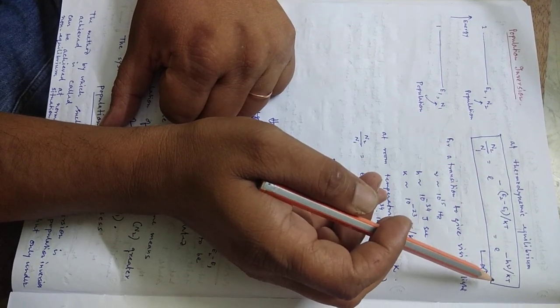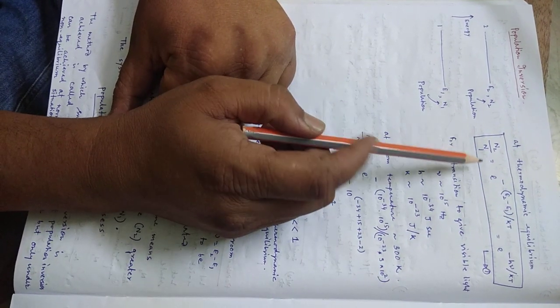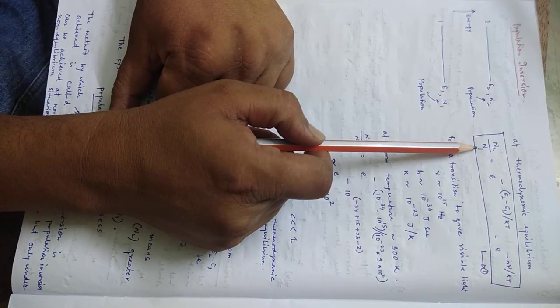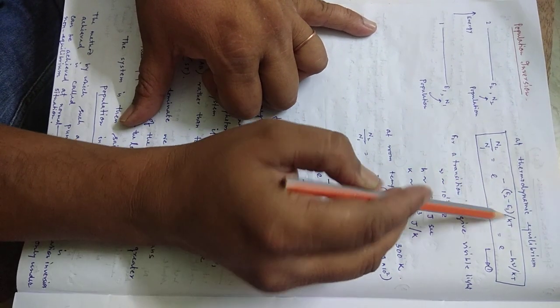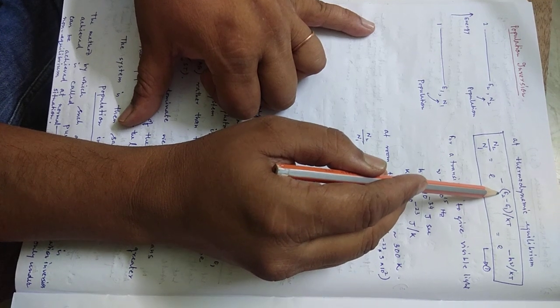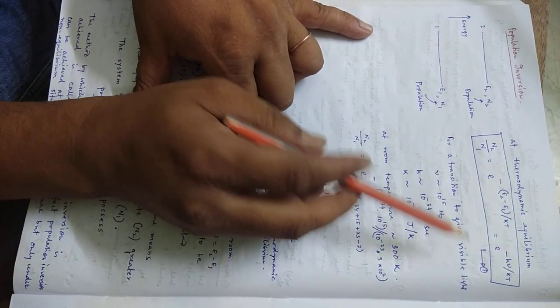And from Boltzmann's formula, from statistical mechanics, we derived this expression that N2 by N1 is e to the power of minus U2 minus U1 by KT, and E2 minus U1 is H nu, so e to the power of minus H nu by KT.